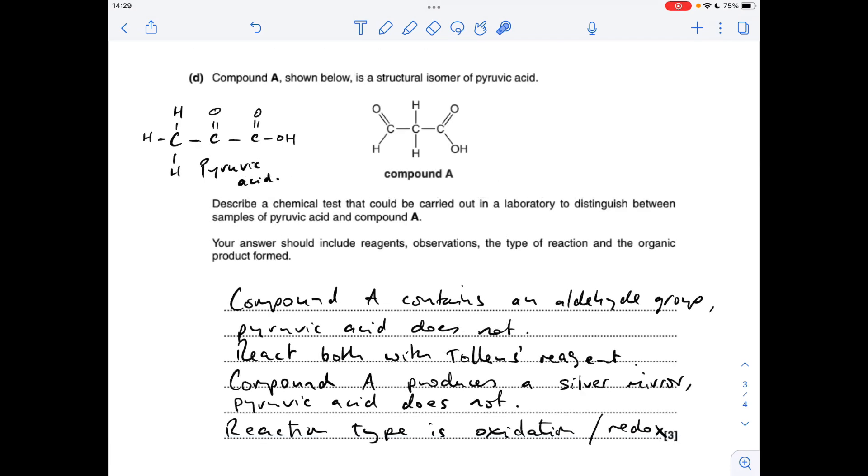And the final part. So how do we distinguish between pyruvic acid and compound A? Well, it's all down to the fact that compound A has an aldehyde group in it, whereas pyruvic acid doesn't. So there's a couple of ways you can do this. You could, obviously, once you've talked about compound A containing the aldehyde group and pyruvic acid not containing one, you could say react them both with Tollens reagent.